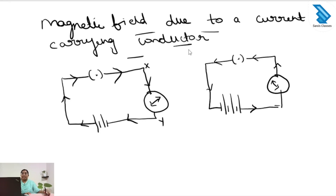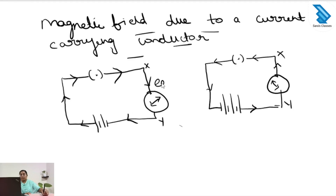Next we look at the magnetic field around a current carrying conductor XY with a key and battery. When we close the switch, current flows from the positive terminal to the negative terminal. Using the right hand thumb rule, the current is flowing in the downward direction. The compass needle deflects in the east direction, which is the direction of the magnetic field line. Here X is the north pole and Y is the south pole.